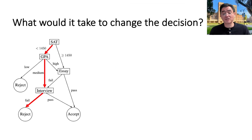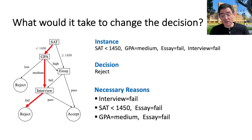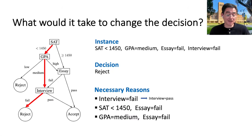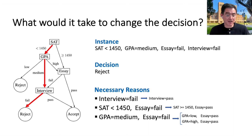Now for the second question: how do we change the decision? We're talking about the same instance — what would it take to get this applicant admitted? This is where the notion of a necessary reason comes in, and we have three of them in this case. Each is a minimal subset of the instance that, if you change it, you are guaranteed to change the decision. The first says: if the person were to pass the interview, they are guaranteed to be admitted. The second refers to SAT score and essay: if they had a score ≥1450 and passed the essay, they are guaranteed to be admitted. The last is interesting because GPA is a multivalued variable — there are two ways to change it, only one of which leads to changing the decision.